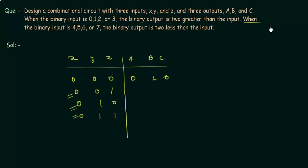It says when the binary input is 4, 5, 6 or 7, the binary output is 2 less than the input. So if I say I am having 4, 4 is 1, 0, 0. It is 2 less than the 4. So it should be 2 again. So 0, 1, 0.